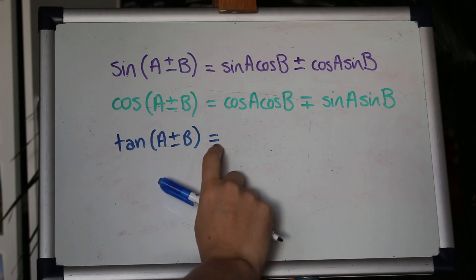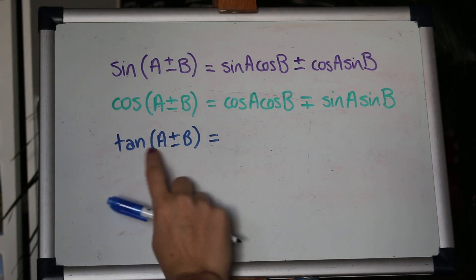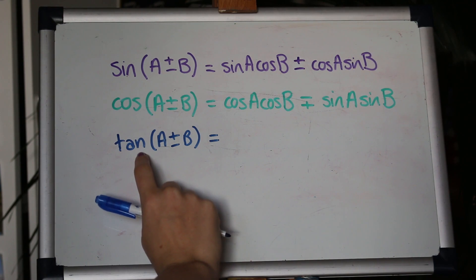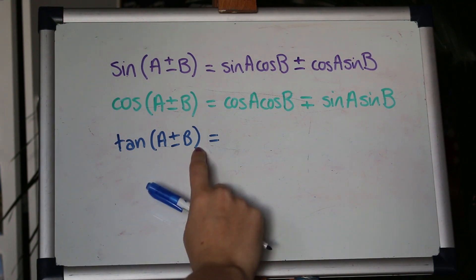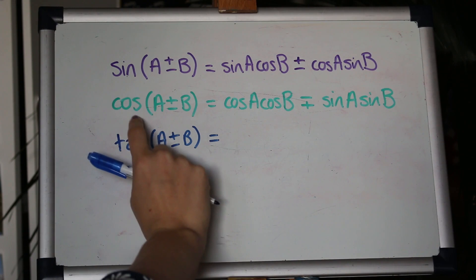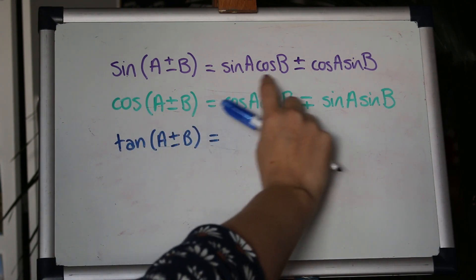So to get tan remember with the identity tan is the same as sine divided by cos so tan of a plus b is the same as sine of it divided by cos of it. So I'm going to put this